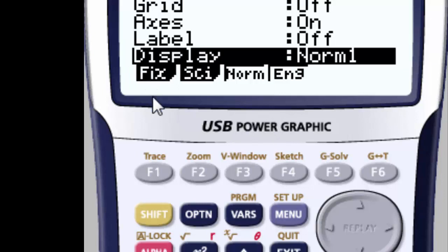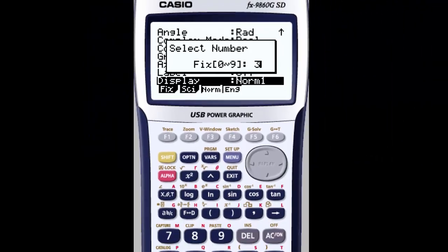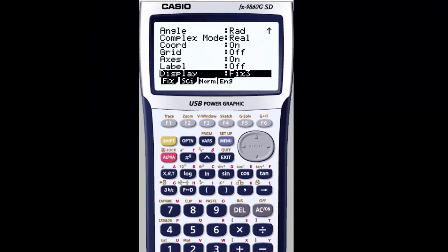So the fix here, I'm going to go to the key directly underneath it. These are called the soft keys, and whatever's on the screen here, I can press this. So I'm going to fix it. How many decimal places do I want? I'm going to use three decimal places. And then I'm going to hit execute, and now I'm good to go.